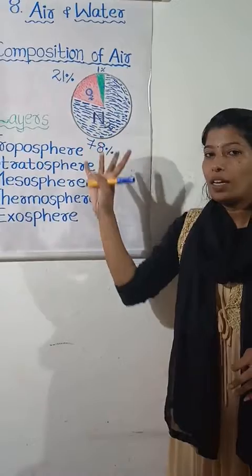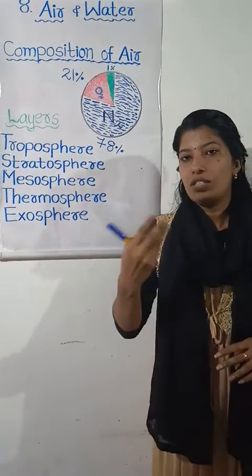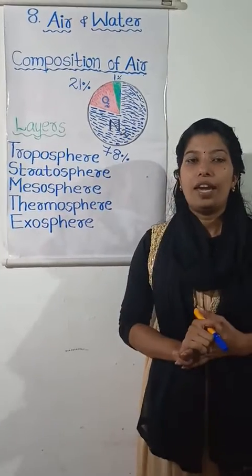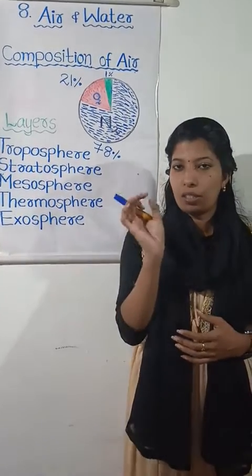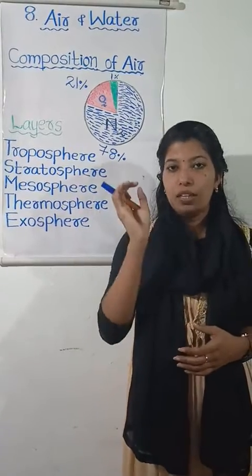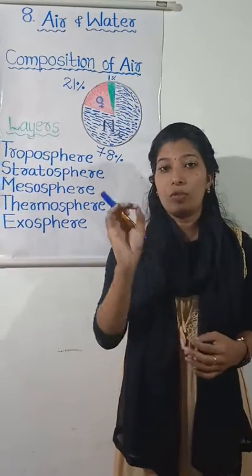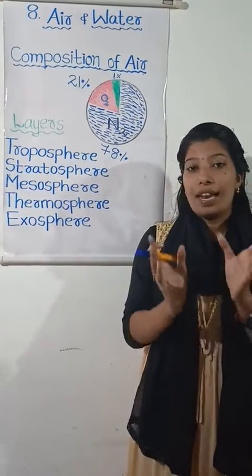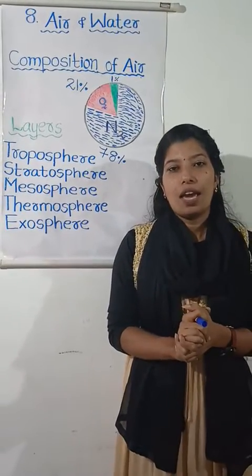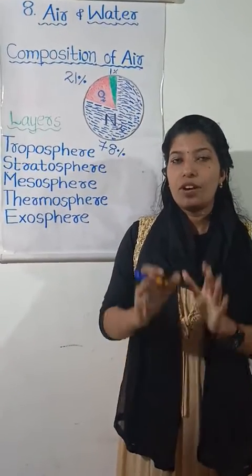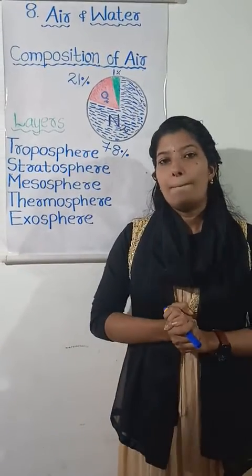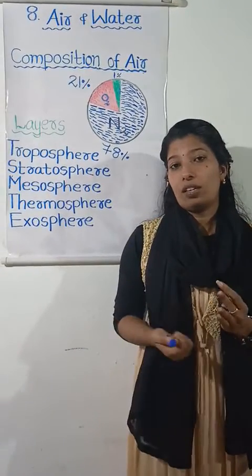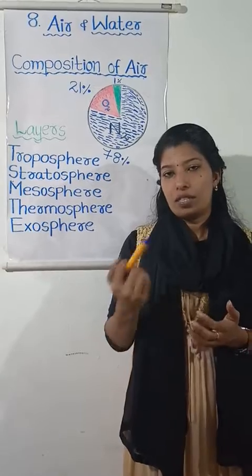Now we have studied about the air composition. Let us discuss something about our atmosphere. We know that air forms a layer around the earth — this layer is called the atmosphere, or earth's atmosphere. The atmosphere is the layer of air that forms around the earth. The first layer of the atmosphere is made up of gases that we breathe.